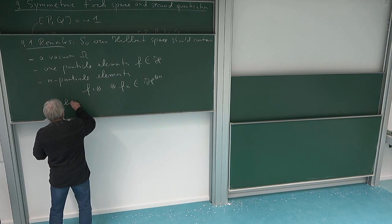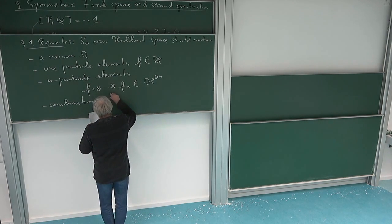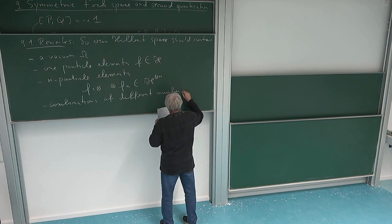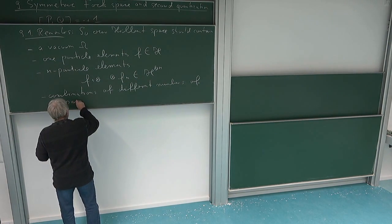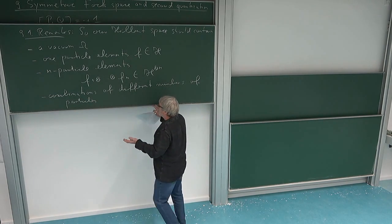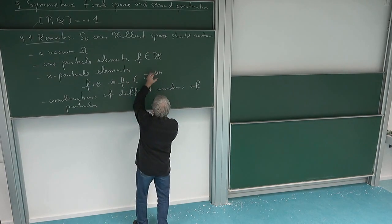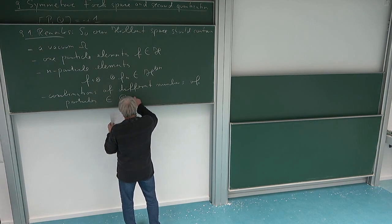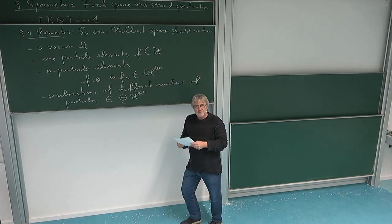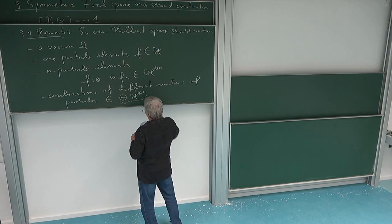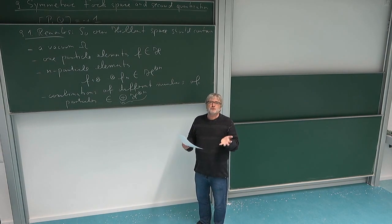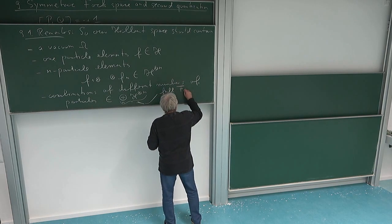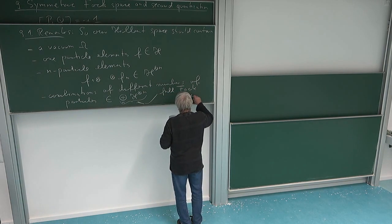We also want combinations of different numbers of particles. These will lie in a direct sum of elements for different n. So in the end, the most general elements are lying in the direct sum over n of the n-fold tensor powers of the one-particle space. Taking this direct sum of tensor powers is what one calls the full Fock space over H.